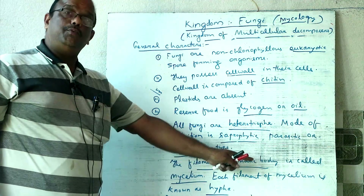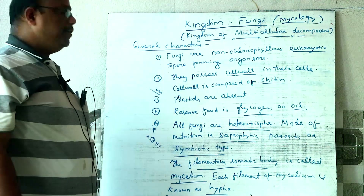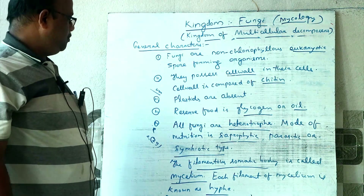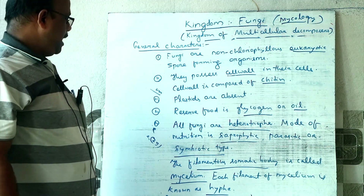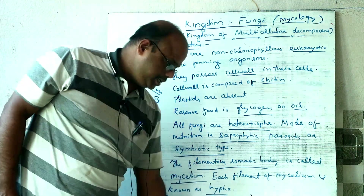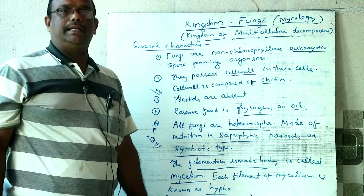The filamentous body of fungi is called mycelium. Each filament of mycelium is known as hypha. The reproduction of fungi takes place both asexually and sexually.